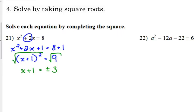So, now we have two equations that we need to solve. x plus 1 is equal to positive 3. x plus 1 is equal to negative 3. We have to solve those individually, kind of like we did with the absolute value equations. So, one of our solutions is x is equal to 2. The other solution is x is equal to negative 4.